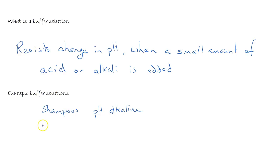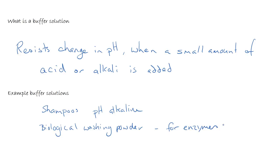Buffers are also used in biological washing powders where you may have enzyme action — the enzyme will only work at specific pH values, and therefore buffers are added to maintain the pH. They're also found in the blood, where it's important to keep the pH around about 7.4, and therefore there's a natural buffer within your blood to maintain the pH just above pH 7.